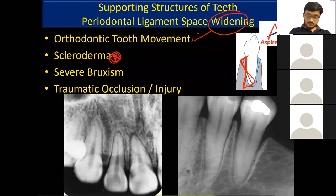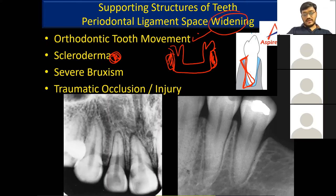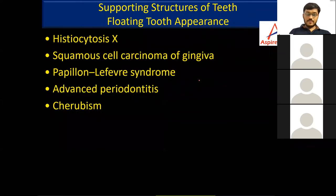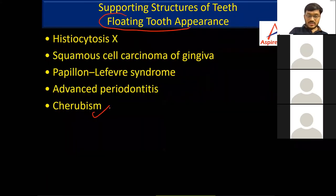In scleroderma, you see generalized thickening of the lamina dura and generalized widening of the PDL space. An additional finding in the mandible in scleroderma is resorption at the region of muscle attachment in the ramus or angle region. Severe bruxism or traumatic injury also causes widening of the PDL. Floating tooth appearance is another important radiographic finding.